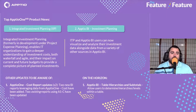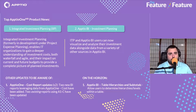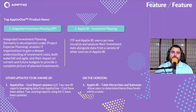First on the plate, we have Integrated Investment Planning in Aptio One. It enables IT organizations to gain a deeper understanding of investment costs with waterfall and agile, and their impact on current and future budgets, to provide a complete picture of planned investments. The reports from that investment planning are now rolled into Aptio BI, so it's kind of a hand-in-hand update — that information can be pulled into Aptio BI to compare to other data and reports.